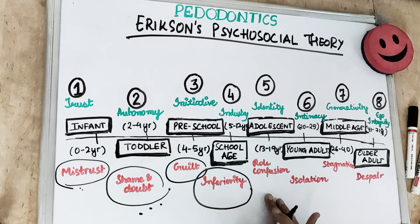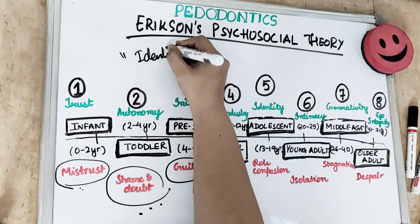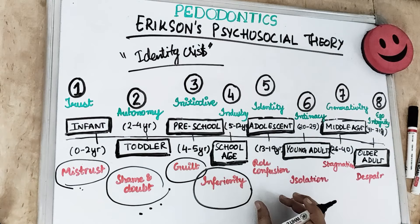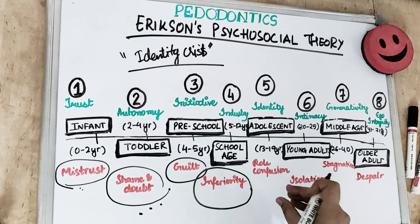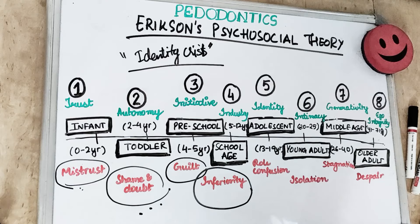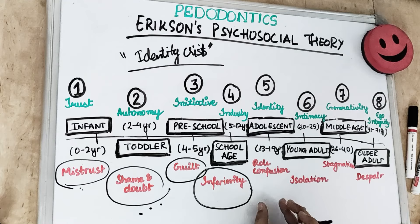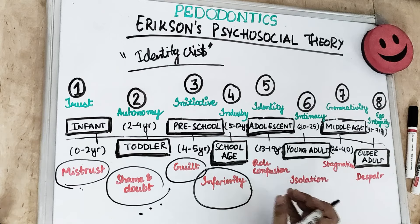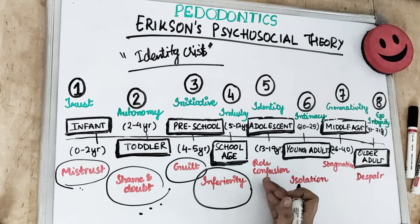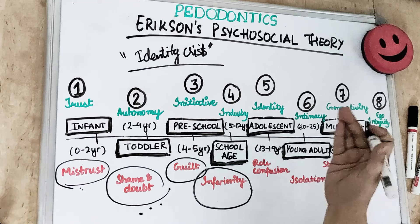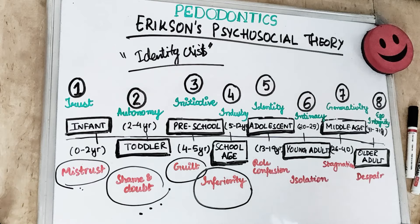The fifth stage is identity versus role confusion. Erikson coined the term 'identity crisis,' which is usually seen in adolescents. They start asking questions like 'Who am I?' and 'What do I want from life?' They need to learn their identity. If they are unable to explore themselves — often due to pressure from parents — they experience role confusion. Any orthodontic treatment at this stage should be carried out with the child's own consent, because adolescents typically reject parental authority.